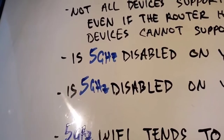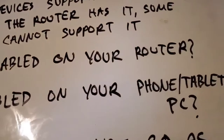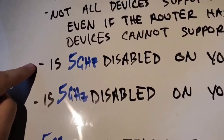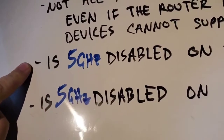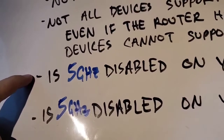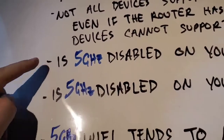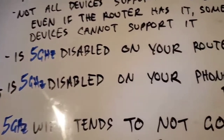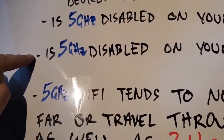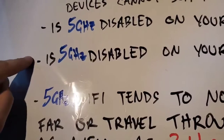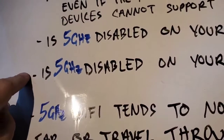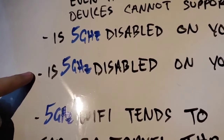You should also ask: is 5 gigahertz disabled on your router? The router might support it and your device might support it, but it could be disabled on the router — that may be why it doesn't show up. Or, is 5 gigahertz disabled on your phone, tablet, or PC? Your phone might support 5 gigahertz but have it disabled in settings, so check your settings to see if it's enabled or disabled.